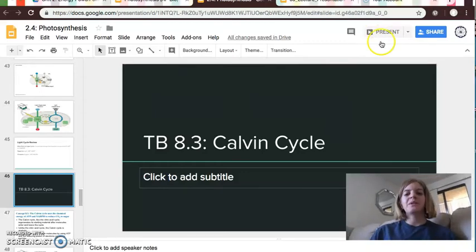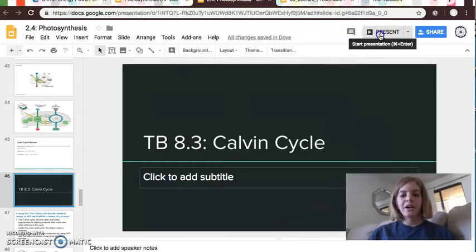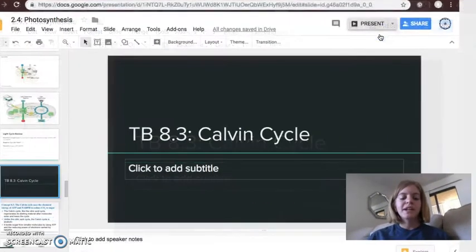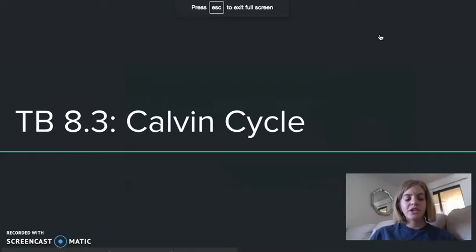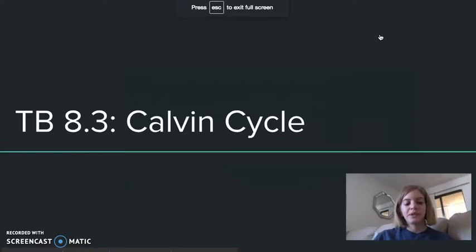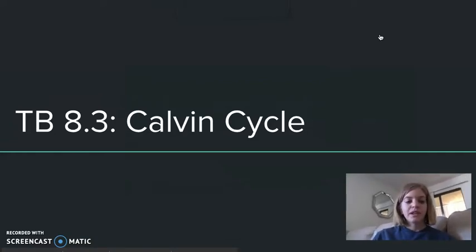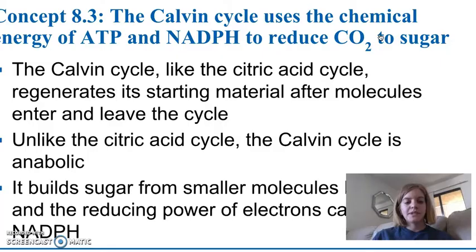Hello. Today we're going to start by talking about the Calvin cycle. This is found in section 8.3 of your textbook, and this is the next step in photosynthesis.